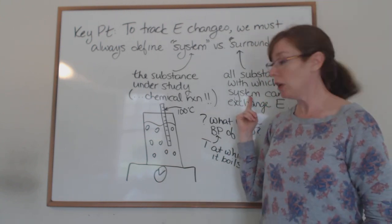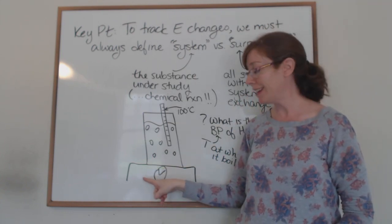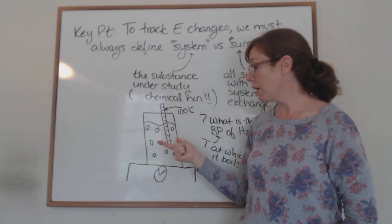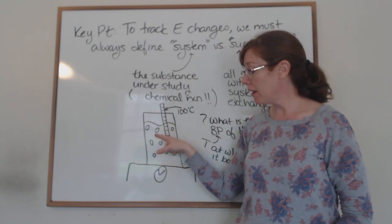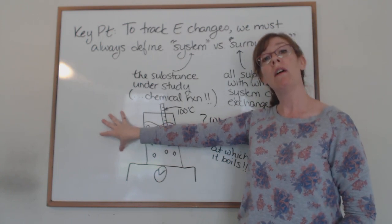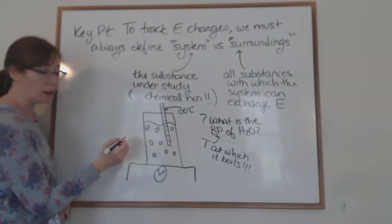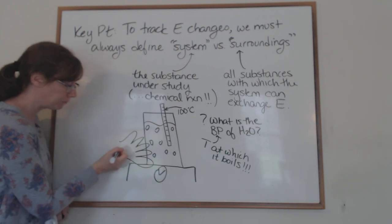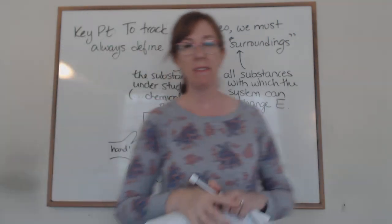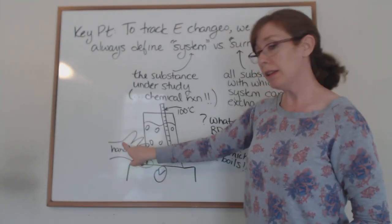Therefore, what are the surroundings? The surroundings are all other things in the universe that can exchange energy with the water — anything that can give heat to or receive heat from the water. The surroundings include the heat plate, which supplies energy to the water; the beaker, which can exchange energy with the water; the air in the room; the thermometer; and — never forget — your hand, which becomes relevant when we think about endothermic and exothermic reactions.